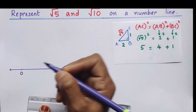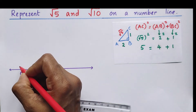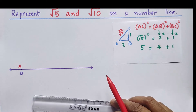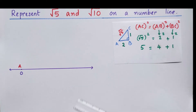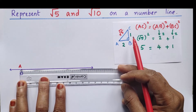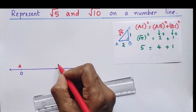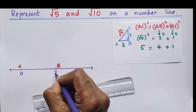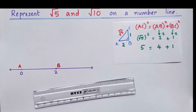Here I am taking 0, and that point is A. Now AB is 2, so we have to take 2 units — either 2 cm or 2 inches. I am taking 2 inches here, so the figure will be a little bit big. This point is B, which we can represent as 2. So AB is 2 units.